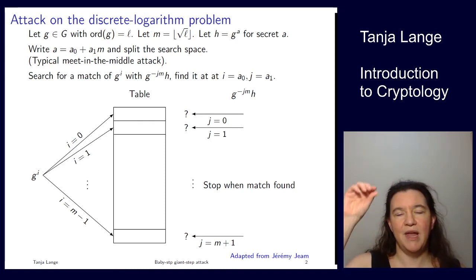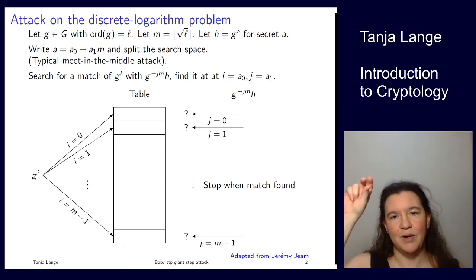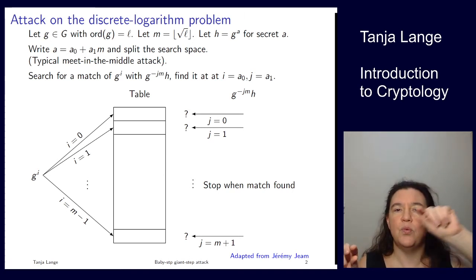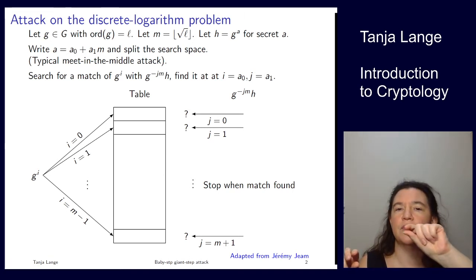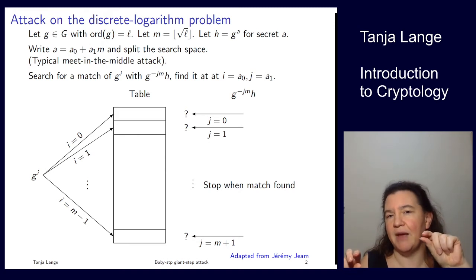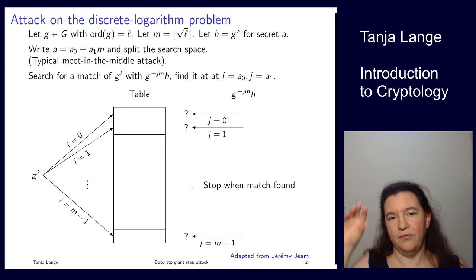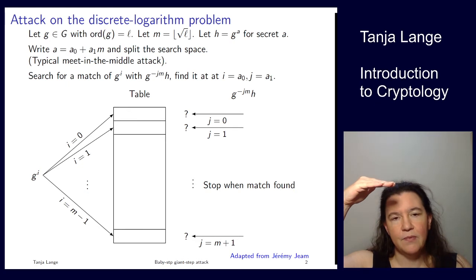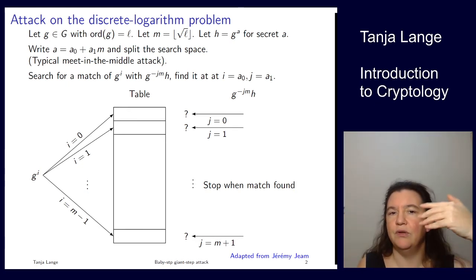We're doing the baby steps with the g to the i, and eventually at g to the A0, we'll expect to find a match with j being A1 for g to the minus j M times h. From the baby steps, we're making this table with about square root of L many entries. And then on the other side, we're just doing the computation. We're looking for j equals 0, is this element in the table? No, it's not.